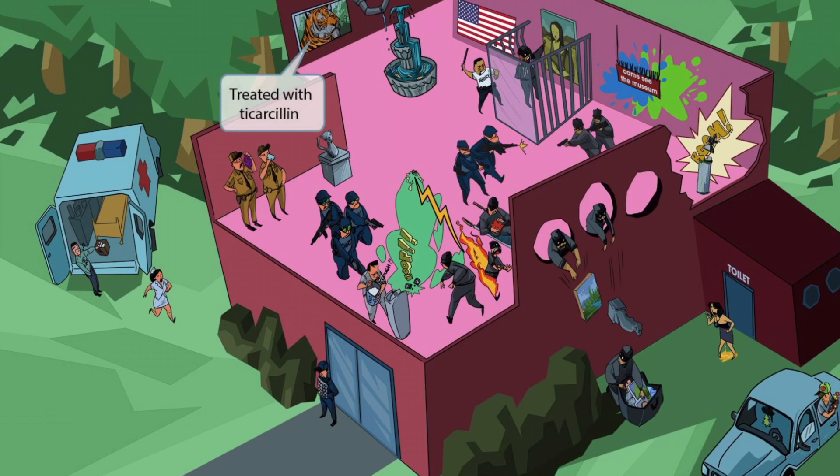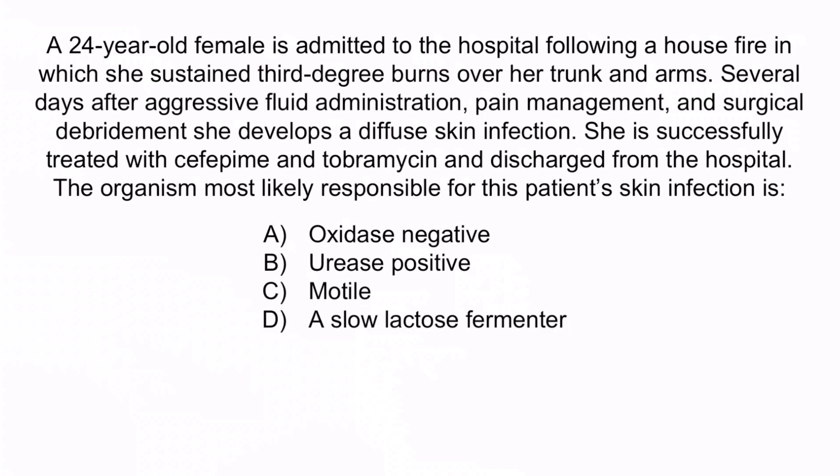Let's finish with a question. A 24-year-old female is admitted to the hospital following a house fire in which she sustained third-degree burns over her trunk and arms. Several days after aggressive fluid administration, pain management, and surgical debridement, she develops a diffuse skin infection. She is successfully treated with cefepime and tobramycin and discharged from the hospital. The organism most likely responsible for this patient's skin infection is: A, oxidase negative; B, urease positive; C, motile; or D, a slow lactose fermenter. There are three key points: the patient is a burn victim, she developed a diffuse skin infection, and she was successfully treated with cefepime and tobramycin — each of these clues are suggestive of Pseudomonas.